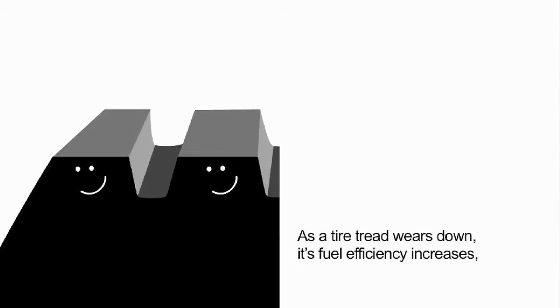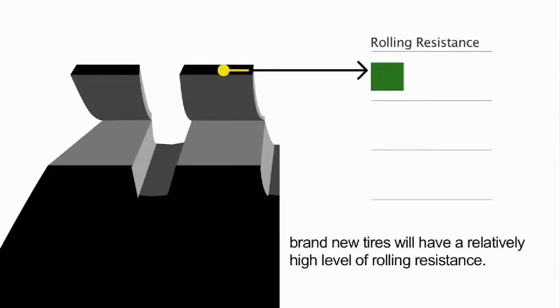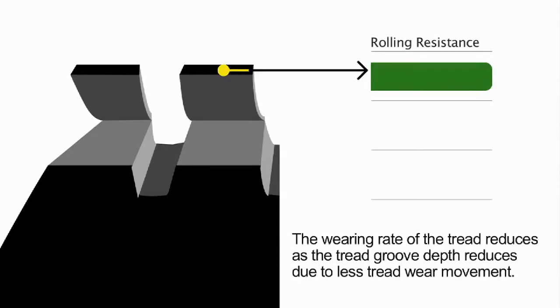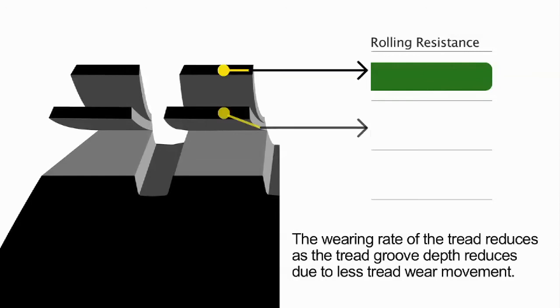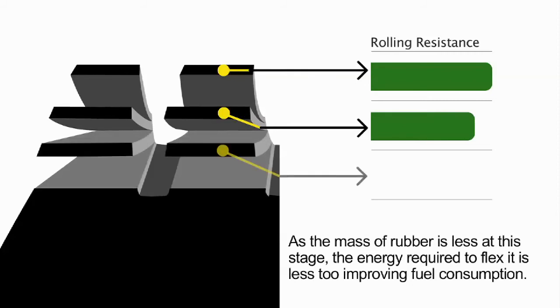As a tire tread wears down, its fuel efficiency increases. Brand new tires will have a relatively high level of rolling resistance. The wearing rate of the tread reduces as the tread groove depth reduces due to less tread movement. As the mass of rubber is less at this stage, the energy required to flex it is less too, improving fuel consumption.